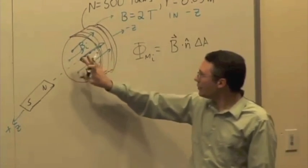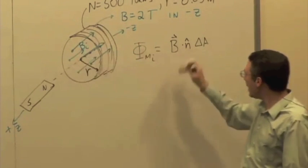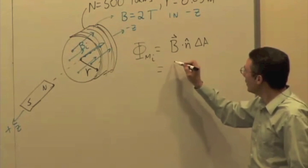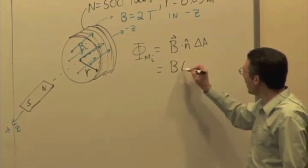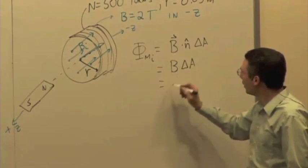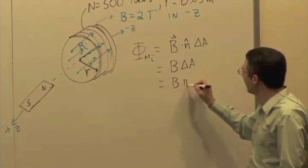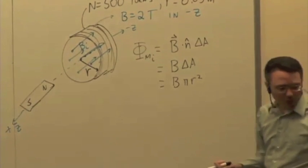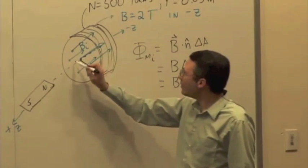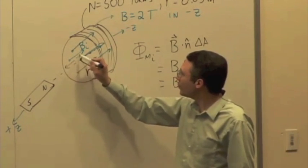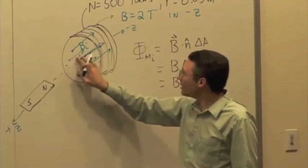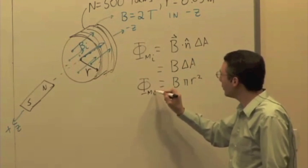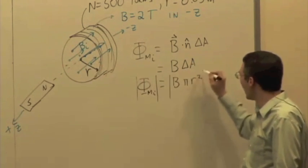So we get B dot n hat times that area. n hat, if this B is perpendicular to the surface, then B and n hat are in the same direction. And so it's going to be just B times that area, or B times pi r squared. Now, we've got to be a little careful because our n hat could be pointing this way or this way. But I'm just worried about the magnitude for right now. So let me just call this the magnitude of the flux to take that sign out of the picture here.